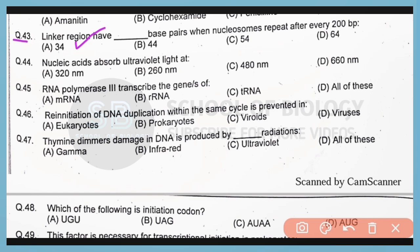Question number 44. Nucleic acid absorbs ultraviolet radiation at 260 nanometers. So correct answer is option B.